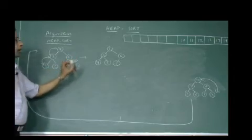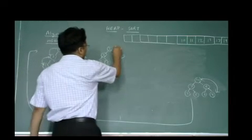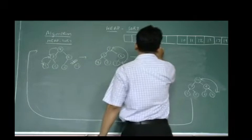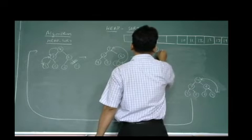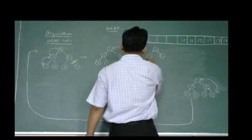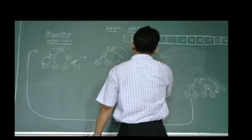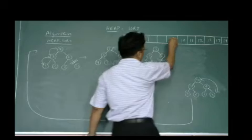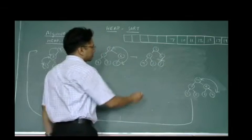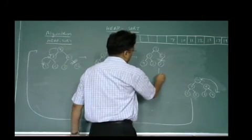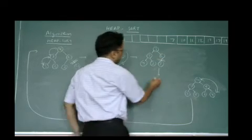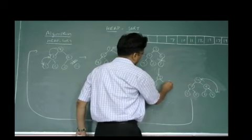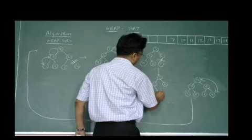We repeat the procedure again. After the swapping the heap becomes: 3, 5, 6, 4, 2 and 7. Again 7 is removed and placed in the sorted array. The heap is now: 3, 5, 6, 4, 2.